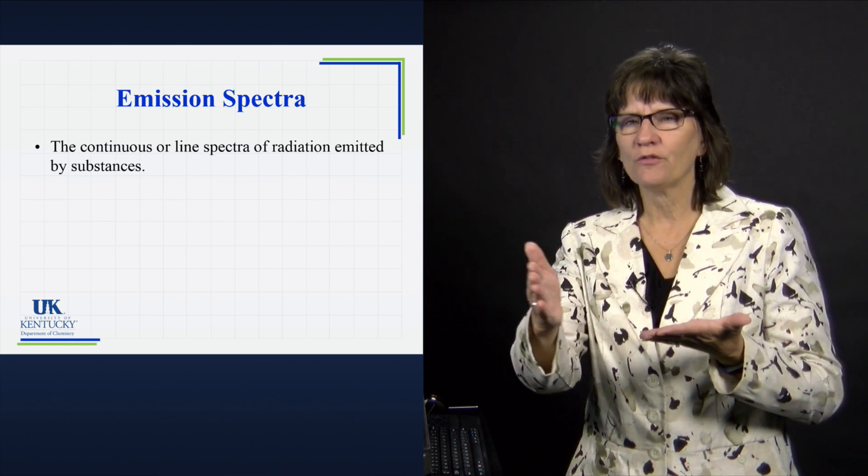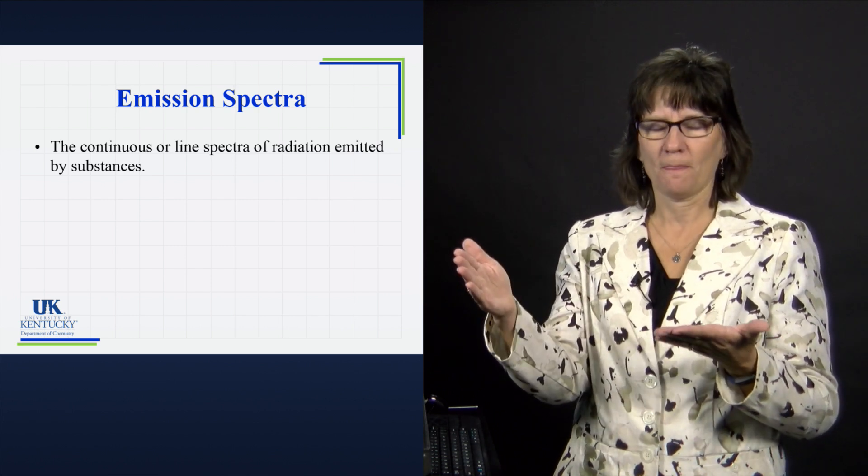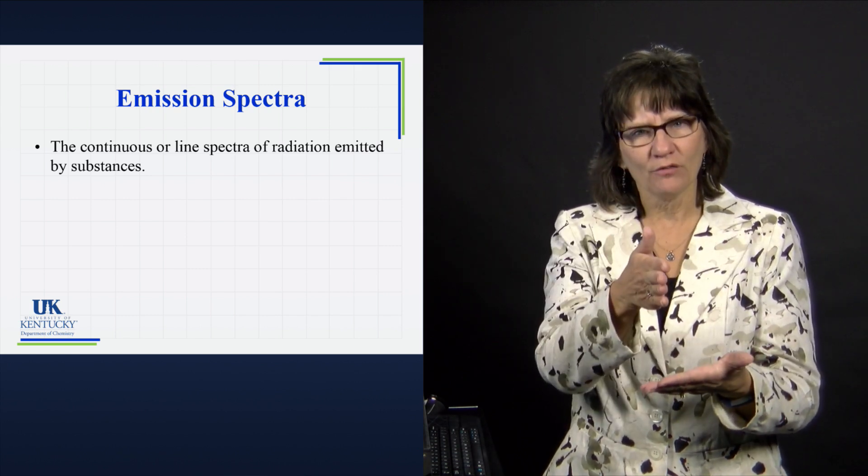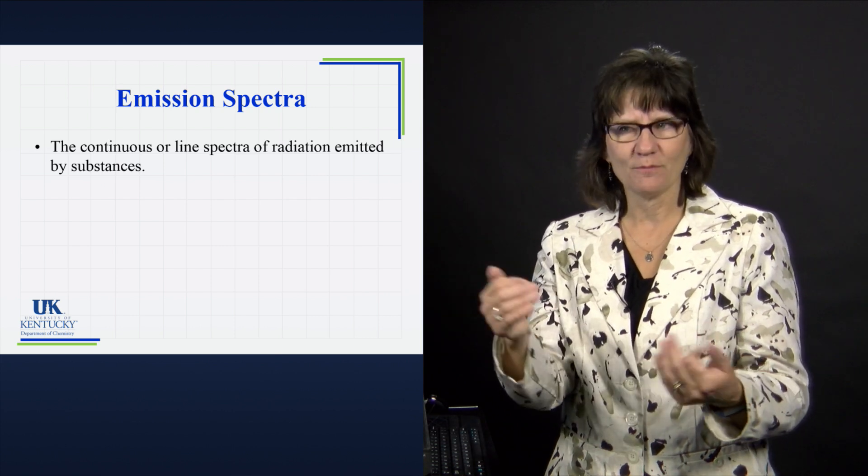Continuous could be what you're used to when you see a rainbow. You're seeing all the different wavelengths of visible light. That's a continuous spectrum. You can also have a line spectrum where when it goes through a prism, you see a line here of light, you see no light, and you see a line here of light. That's a line spectrum.